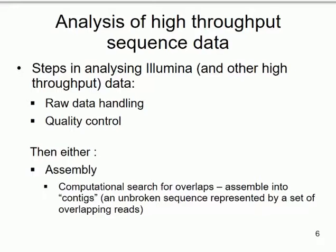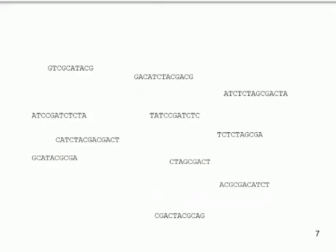The de novo assembly process is essentially the same as putting jumbled sentence fragments back together, except done computationally. The computer looks for overlaps between all the different sequences and assembles them. When you've got a stretch of sequences that all overlap with each other and you've defined that stretch, it's called a contig — short for contiguous sequence. A contig might be hundreds, thousands, or tens of thousands of bases long, where you're confident the order of the sequence is correct.